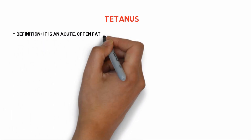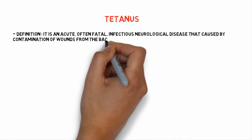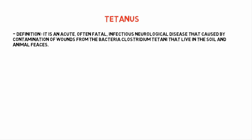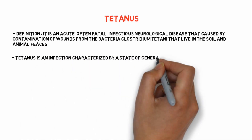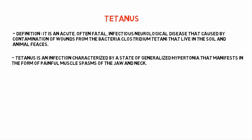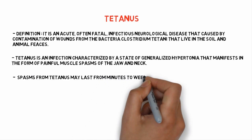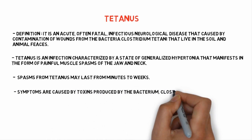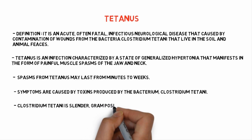Coming to the definition of Tetanus, it is an acute, often fatal, infectious neurological disease caused by contamination of wounds from bacteria known as Clostridium tetani, which lives in soil and animal feces. Tetanus is an infection characterized by a state of generalized hypertonia that manifests in the form of painful muscle spasms of the jaw and neck. Spasms from Tetanus may last from minutes to weeks, and symptoms are caused by toxins produced by the bacterium Clostridium tetani.